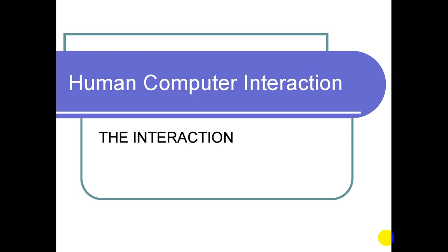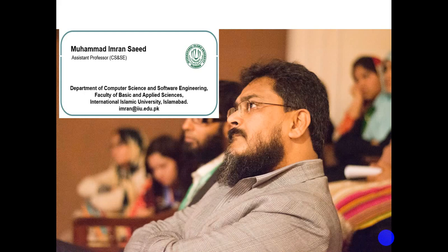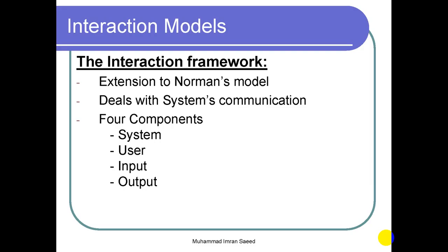By the term interaction, we mean how a human communicates with the computer or the computer communicates with the human. So far we have seen Norman's model for interaction, and today we are going to study the interaction framework. In fact, the interaction framework is the extension to Norman's model.